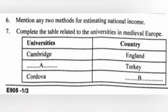Question 6: Mention any two methods for estimating national income. Answer: a) Product method, b) Income method, c) Expenditure method. Write any two points.